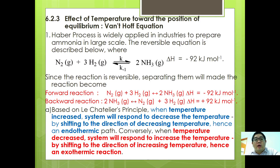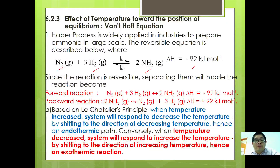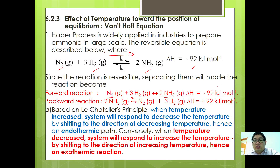The Haber process is widely applied in industry to prepare ammonia at a large scale. The reversible equation shows nitrogen reacting with hydrogen to give ammonia. Separating into forward and backward reactions: the forward reaction is N2 plus 3H2 gives 2NH3, with delta H equal to negative 92 kilojoules per mole.